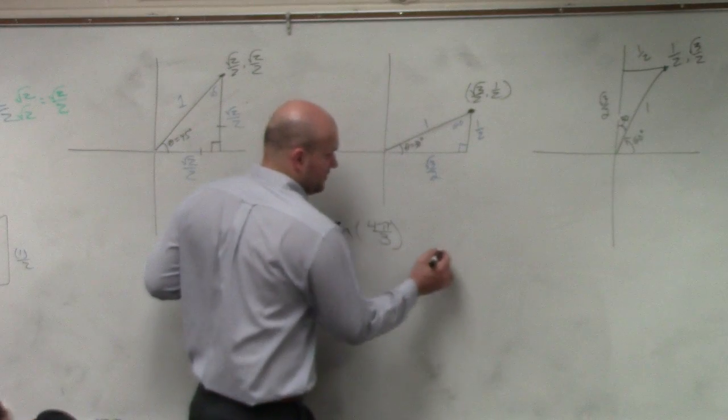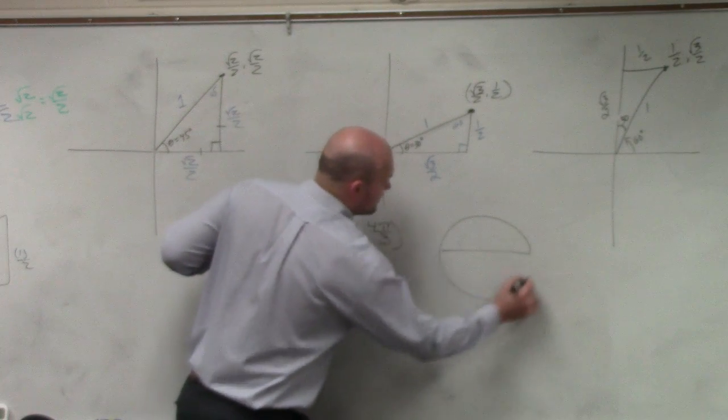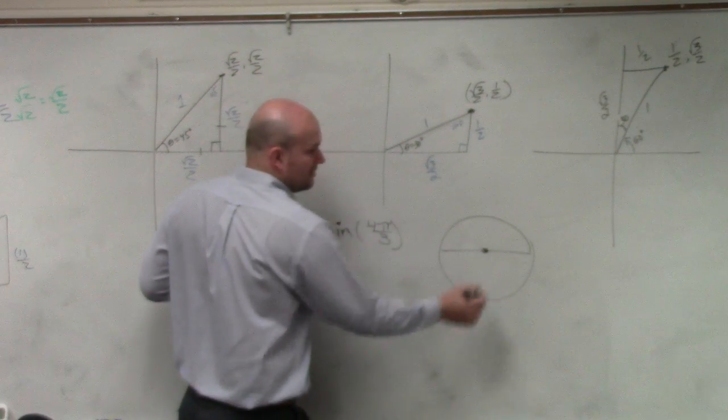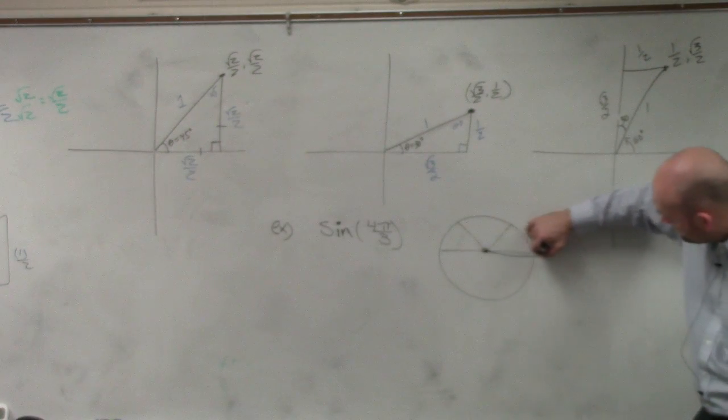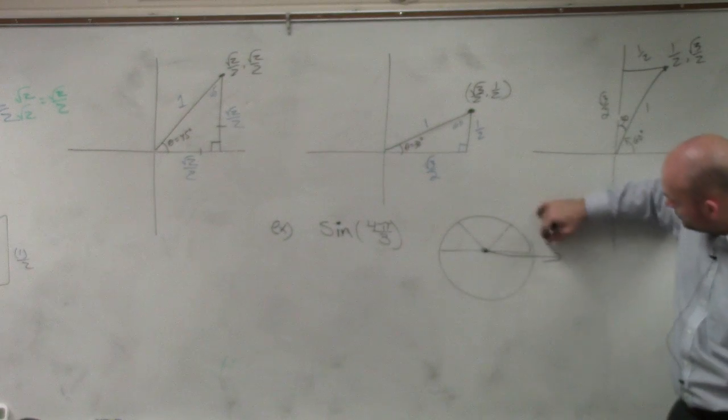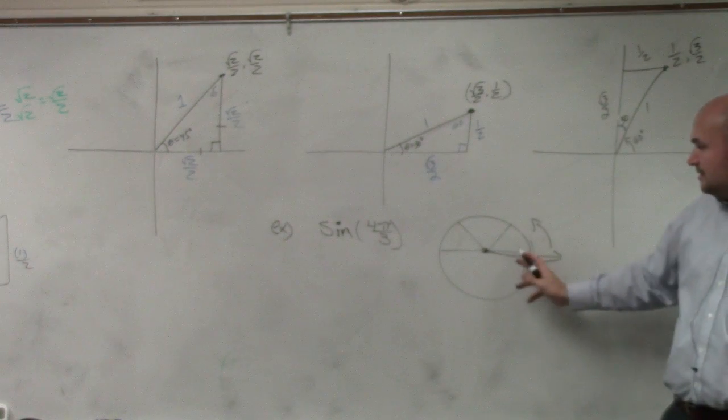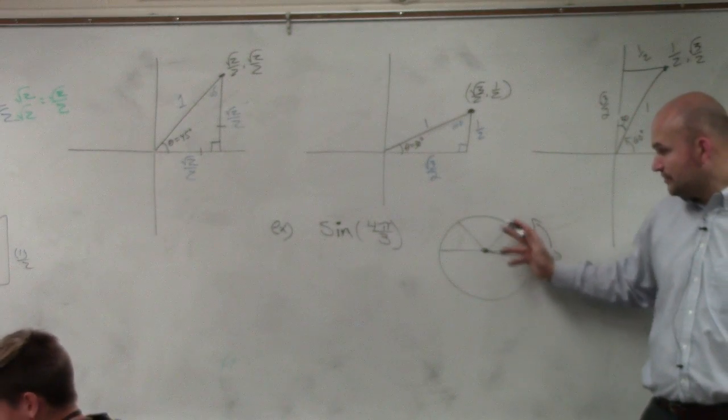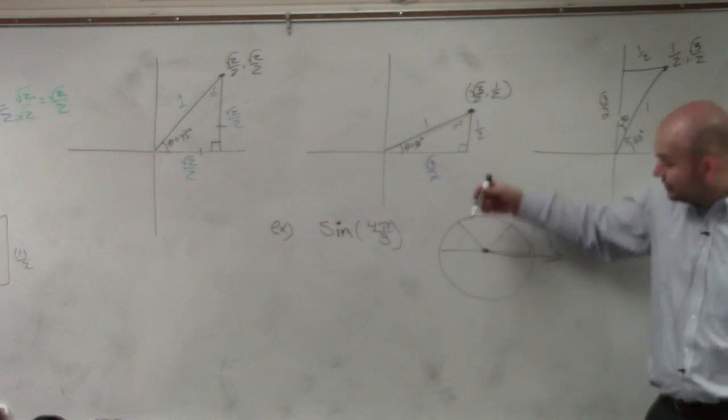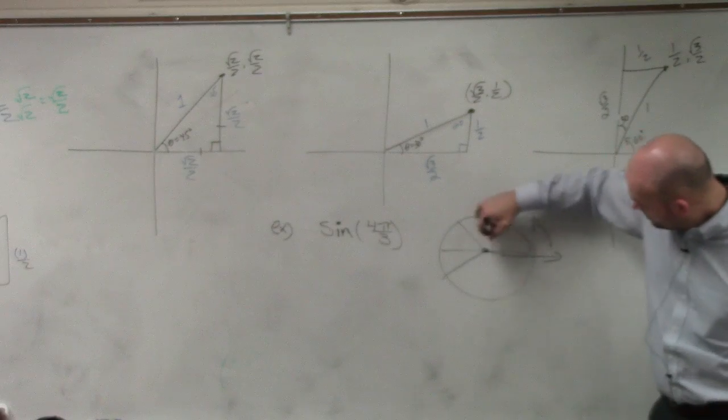So everybody should be fairly familiar. If I wanted to graph 4 pi over 3, I could break that up into thirds because I know that I'm going to start with my initial side here. My angle is positive, so I'm going to rotate this way. Halfway around the circle is pi. But if you break it up into thirds, that's 1 third, 2 thirds, 3 thirds. So I need to go 1 little extra third over, which is right there.